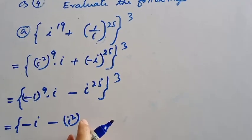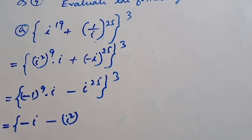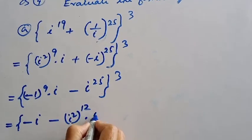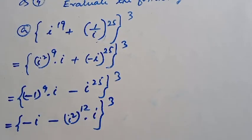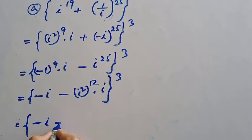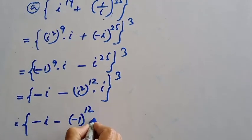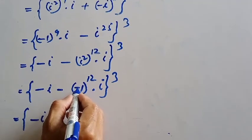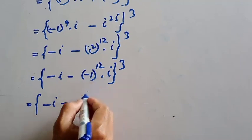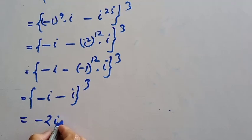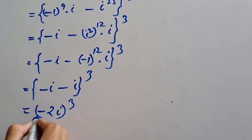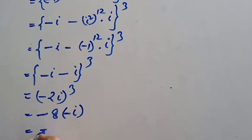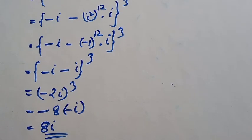Now i squared gives minus 1; for i to the power 25, since 2 times 12 equals 24, we get i to the power 24 plus 1 equals i. Then minus i whole cube: since it is an odd number, minus i cubed equals minus of minus i, which is plus i. So minus i plus minus i gives minus 2i, cubed equals minus 8i.